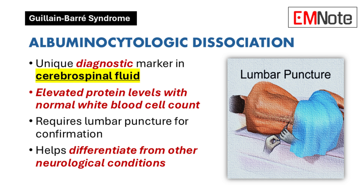Albuminocytologic Dissociation: A distinctive diagnostic feature of this syndrome is albuminocytologic dissociation in cerebrospinal fluid analysis. This specific finding demonstrates elevated protein levels concurrent with a normal white blood cell count. Lumbar puncture becomes an essential diagnostic procedure, enabling clinicians to differentiate Guillain-Barré Syndrome from other neurological conditions. This marker provides crucial diagnostic clarity.